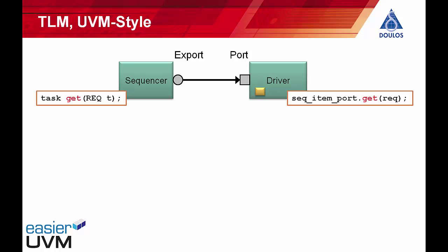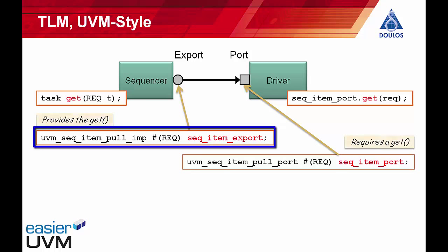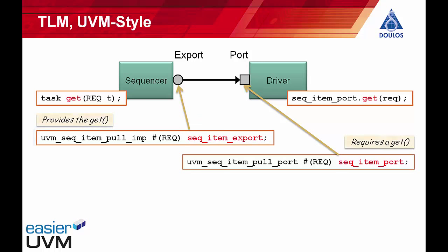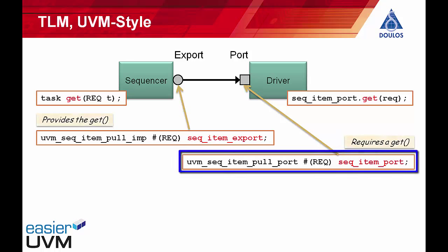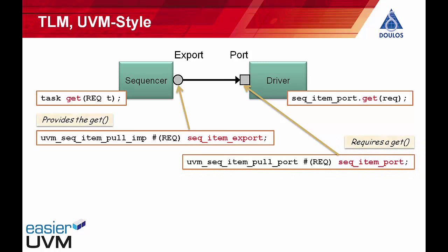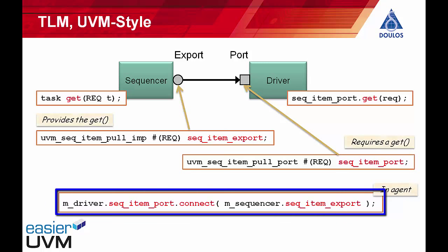Rather than the driver calling the get task directly, the driver calls the task through a port which is connected to an export on the sequencer. An export declares that a particular component is going to provide a particular task or function. In this example, the UVM sequence item pull implementation says that our sequencer provides an implementation of the get task. The port declares that a particular component requires a particular task to be available because it's going to call it. At the top level, we connect the port to the export by calling the connect method of the sequence item port.